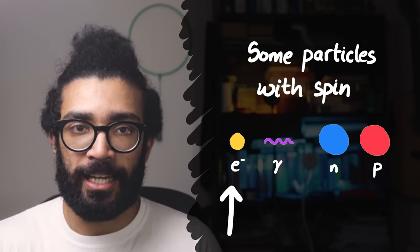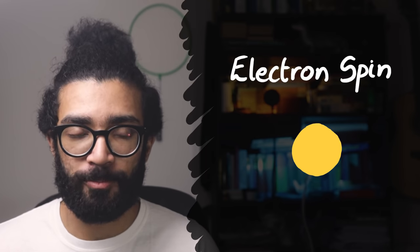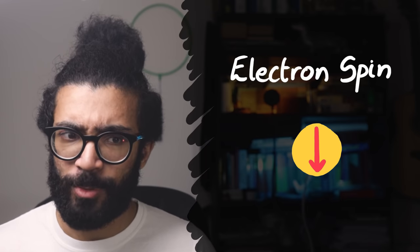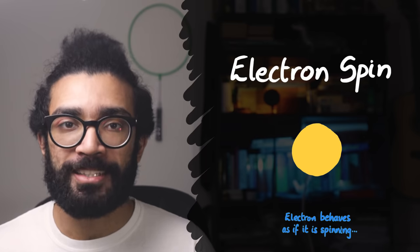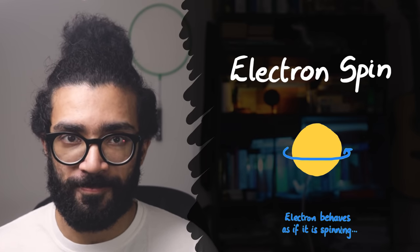Some of you might be familiar with the idea that an electron's spin can be measured in one of two different states, usually called spin up and spin down. What this actually means is that our electron can have this inherent angular momentum that makes it behave as if it's spinning either clockwise or anticlockwise.